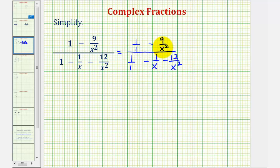Now, in order to subtract these fractions, we must obtain a common denominator. So looking on top, the common denominator would be x squared, so we're going to multiply one over one by x squared over x squared. Looking at the bottom, notice that x squared is also the common denominator, so again, we'll multiply one over one by x squared over x squared, but for one over x, we'll multiply by x over x.